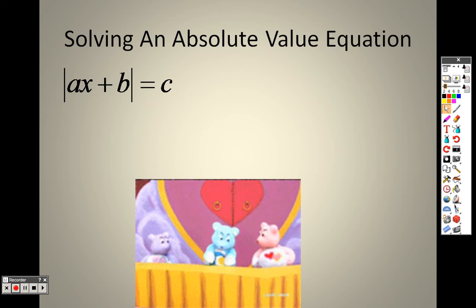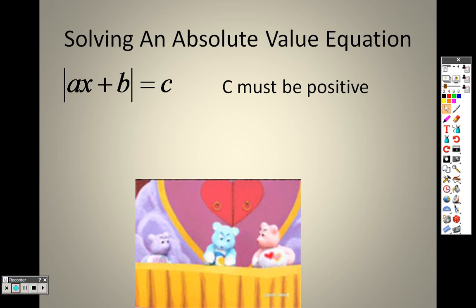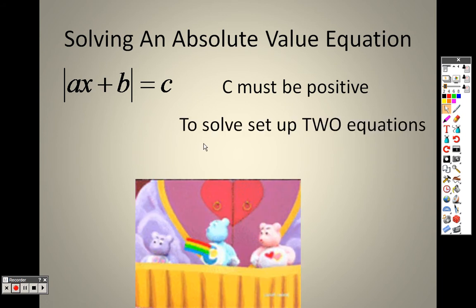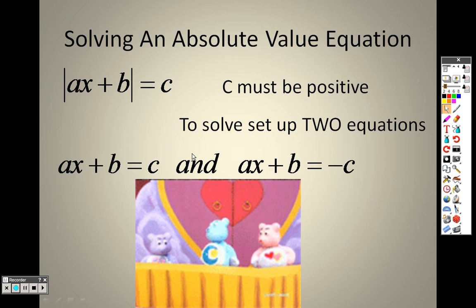Solving an absolute value equation. This is just like a linear equation, except now one side of the equal sign is inside absolute value bars. Keep in mind that c must be positive — absolute values need to be positive. To solve this, we set up two different equations: one exactly as written without the absolute value signs, and a second one where we make the other side negative.